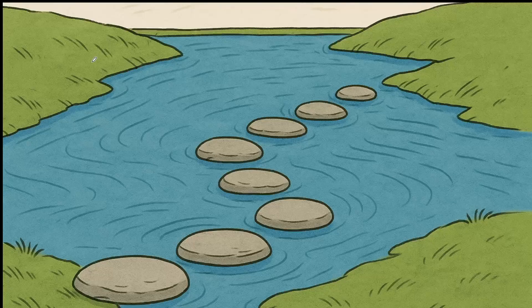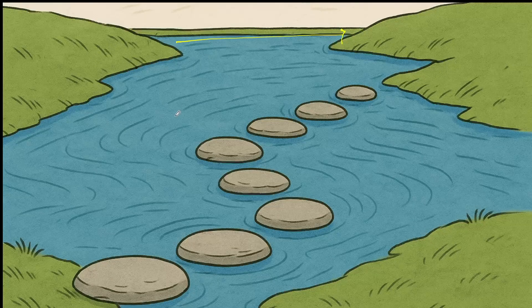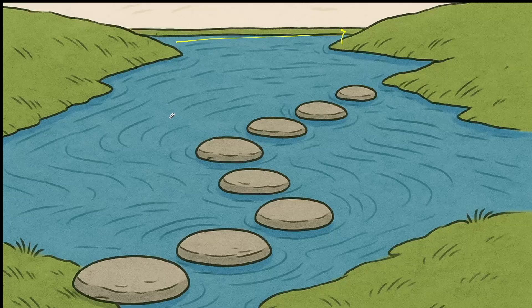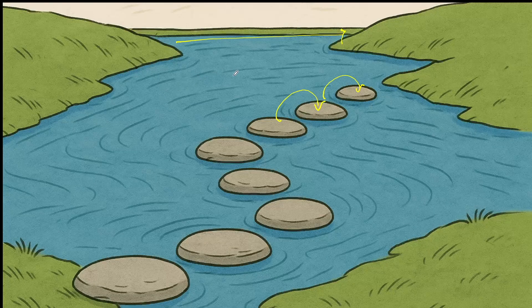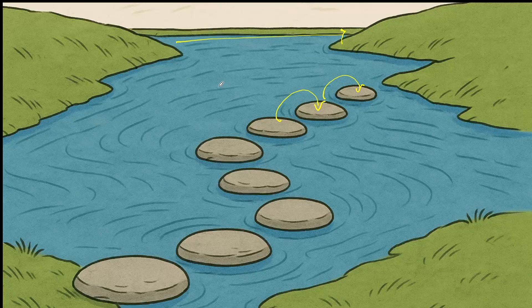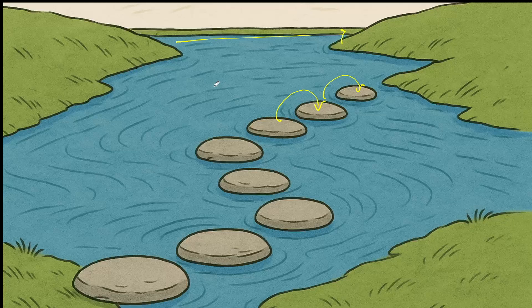Imagine you're playing a video game where your character needs to cross a river. What would be the fastest route? Walking through the water or jumping from one stone to the next? Obviously, the jumps get you across much faster.